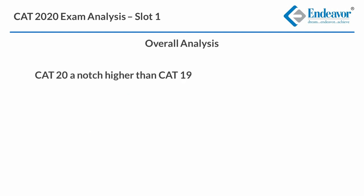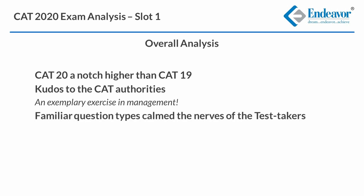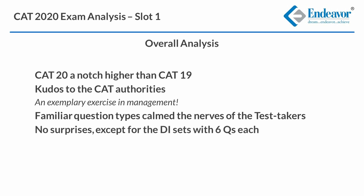CAT 2020 overall turned out to be a notch higher than CAT 2019, the pandemic and lockdown notwithstanding. Kudos to the CAT authorities on two counts: first, on being uncompromisingly qualitative, and second, on seamless COVID-19 safety adherence. In favour of the test takers was the respite offered by the familiar question types. Though the overall number of questions and time duration were changed, the familiar question types calmed the nerves of test takers. There were no surprises, except for the DI sets with 6 questions each, which actually would have turned in students' favour.